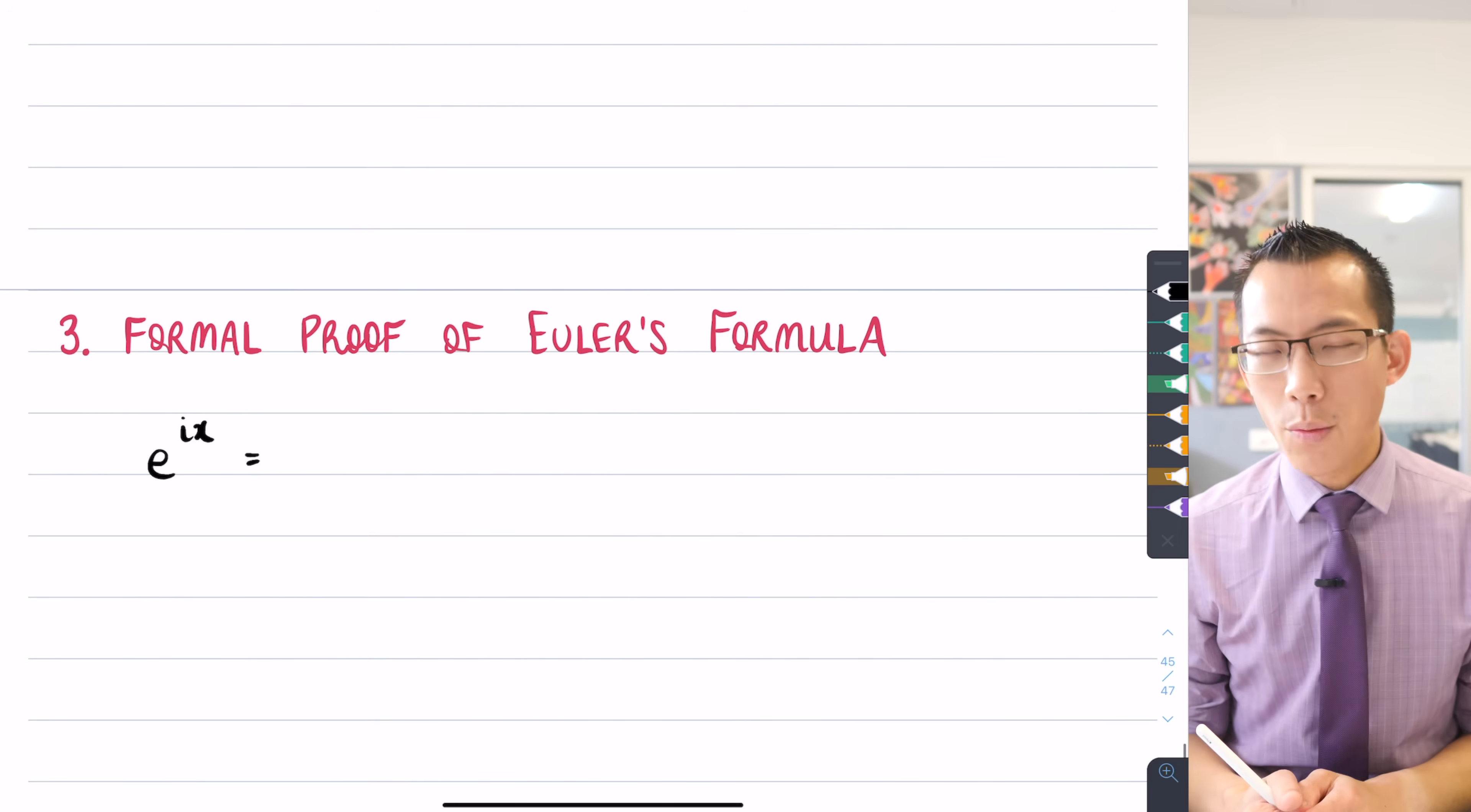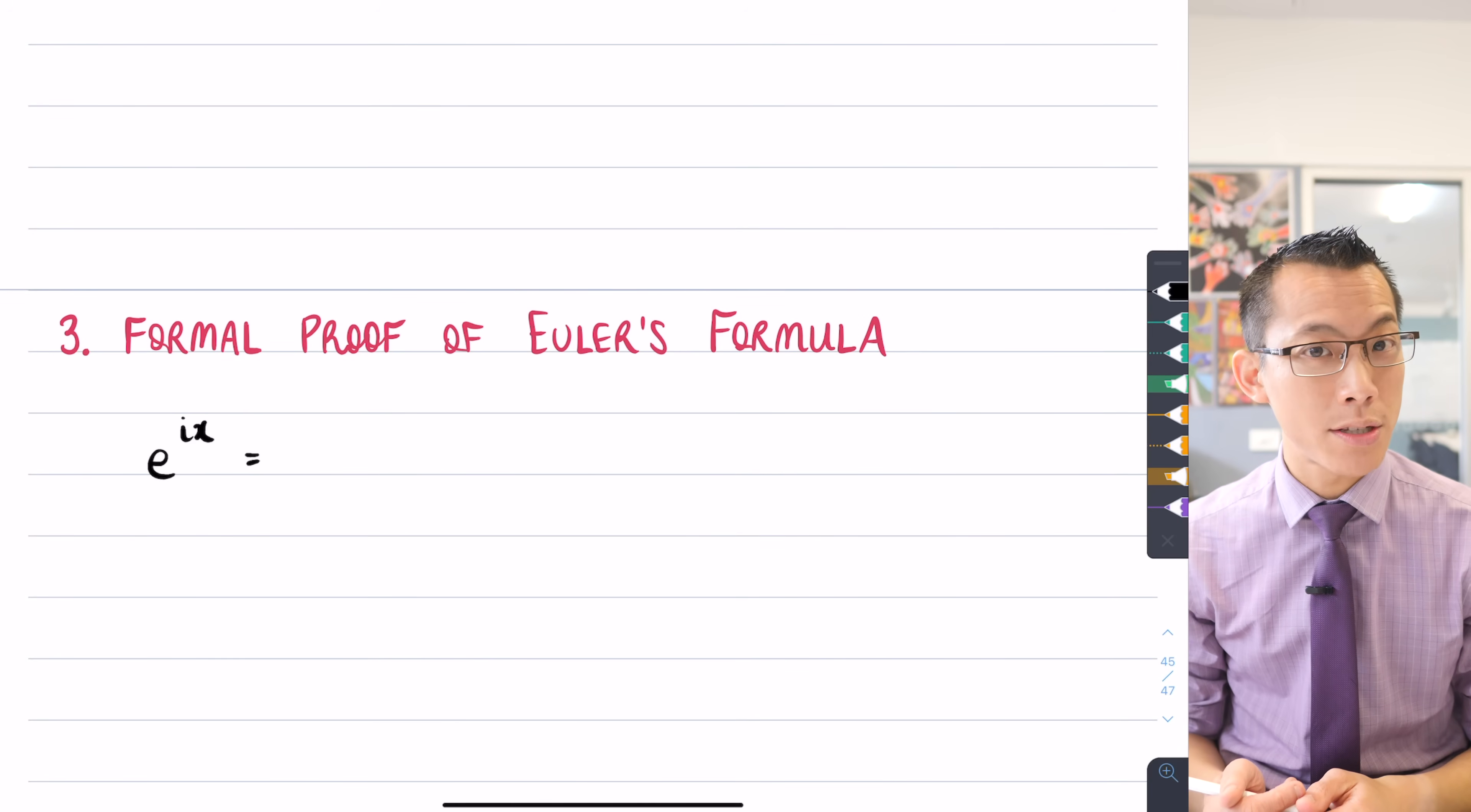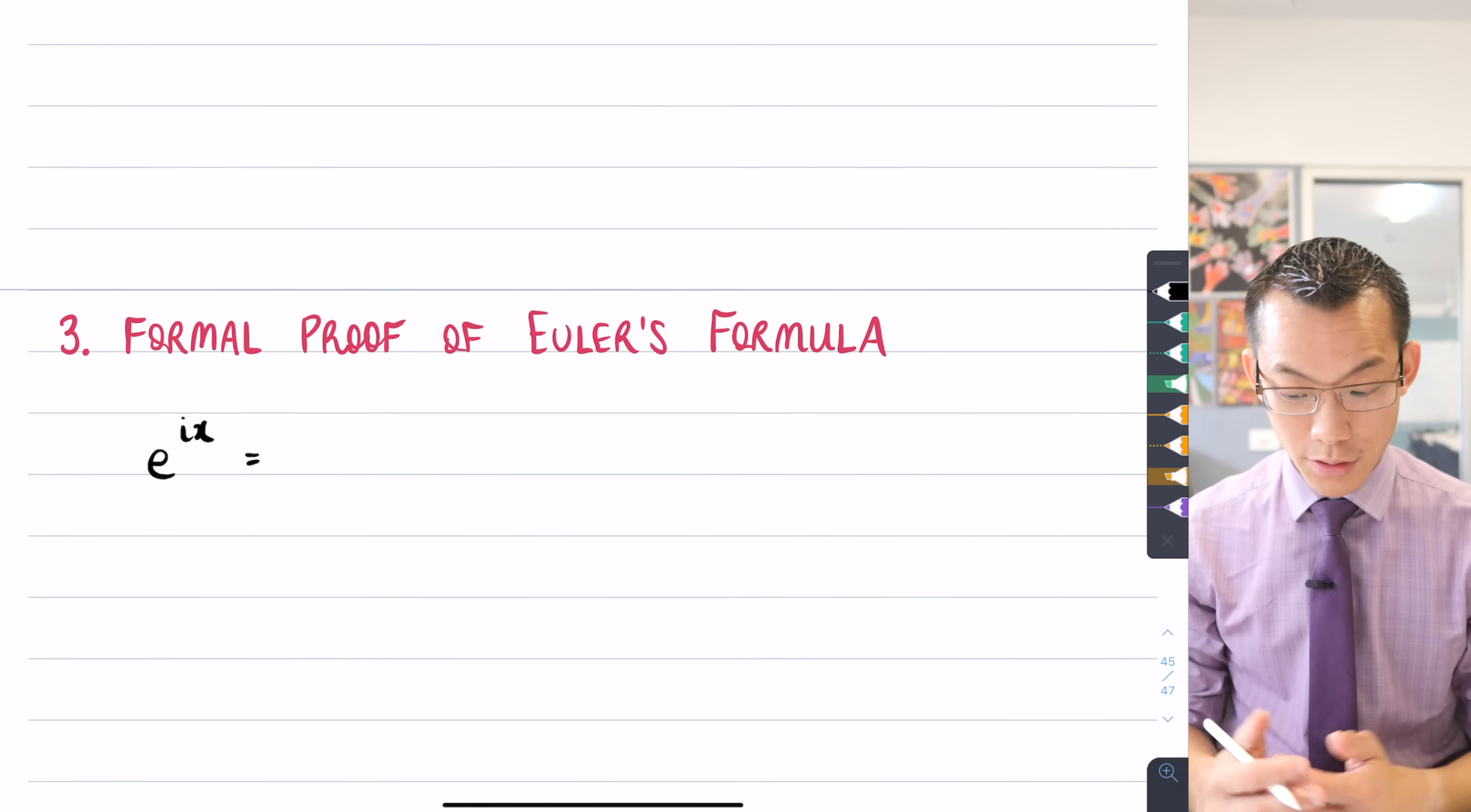What I can say is, even though I don't know what e to the ix is, it should be a complex number of some form, of some variety.